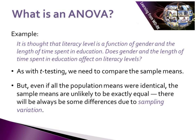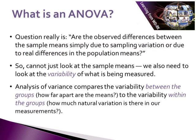Even if all population means were identical, the sample means are unlikely to be exactly equal — there will always be some variation due to sampling variation. The question therefore becomes: are the observed differences between the sample means simply due to sampling variation, or are they due to real differences in the population means? This question can't be answered from sample means alone. We also need to look at the variability of what we are measuring. In the analysis of variance, we compare the variability between groups — how far apart the means are — to the variability within groups — how much natural variation there is in our measurements. This is why it is called the analysis of variance.